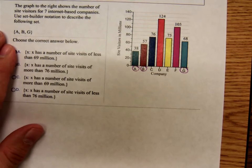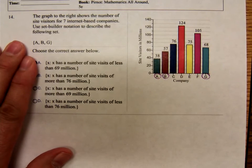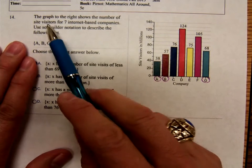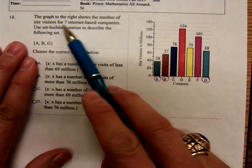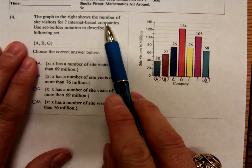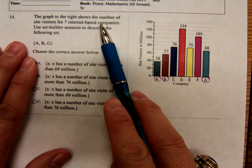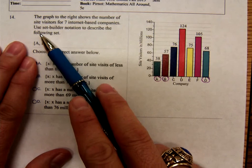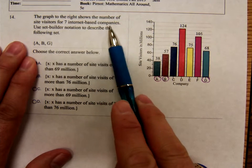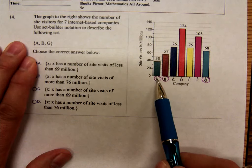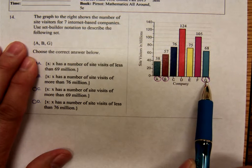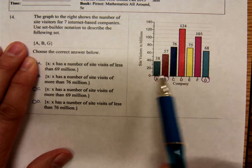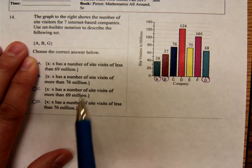Number 14. The graph to the right shows the number of site visitors for seven internet-based companies. Use set builder notation to describe these. So you're describing A, B, and G. Let's see, which one of these describes it?